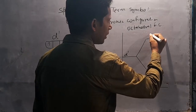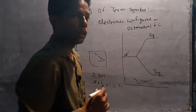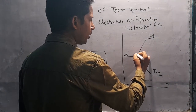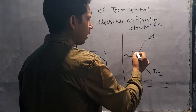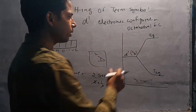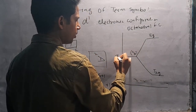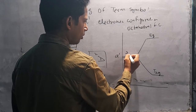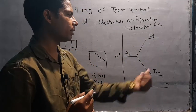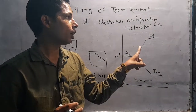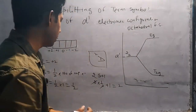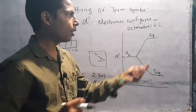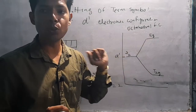तो octahedral field में t2g low energy पर और eg high energy पर होते हैं। D1 electronic configuration का 2D term symbol इस तरह octahedral field strength में spread होकर दिखाया गया है। अगर हम tetrahedral में इसको बनाएं तो इसका opposite हो जाएगा, और tetrahedral में हम सिर्फ e और t2 लिखते हैं, g हट जाता है।